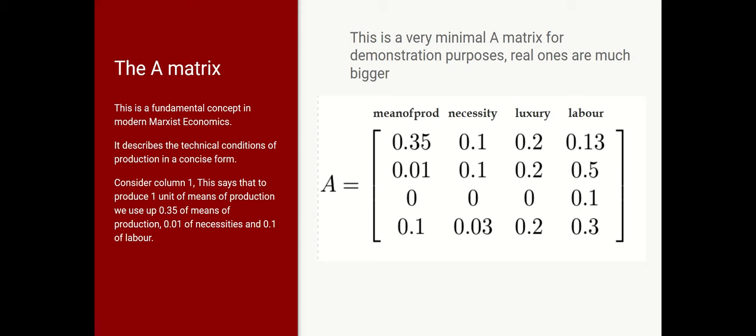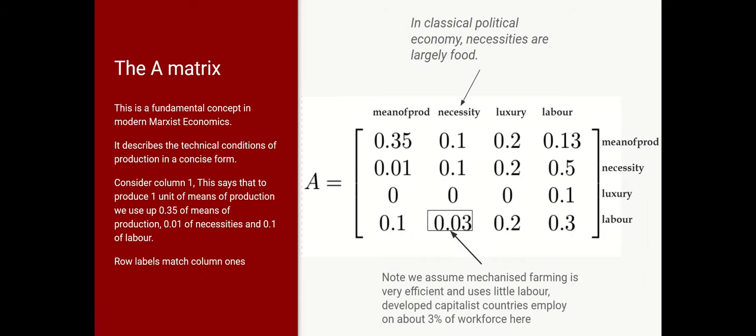Now, let's look at column one. What it's saying is that to produce one unit of means of production, I'm going to use up 0.35 units of means of production, 0.01 unit of necessities, and 0.1 unit of labour. So you go down the column and it tells you how much is going to be required to produce one unit of each of the outputs. And the row labels match the column labels. So that row one means means of production, row two necessities, row three luxury, etc.